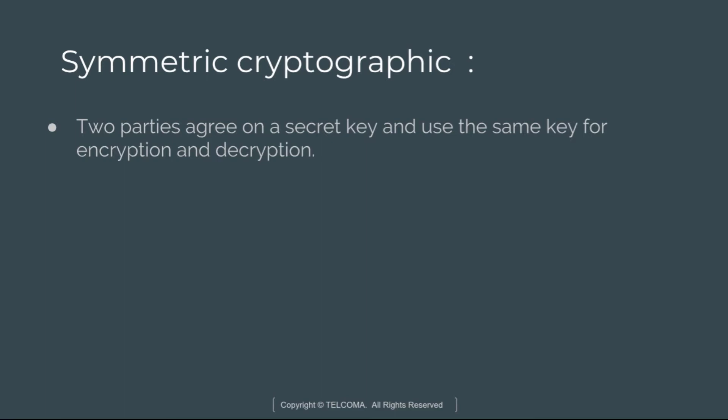For symmetric cryptography, two parties agree on a secret key. The secret key is a private key, and both parties use the same key for encryption and decryption. The problem with this approach is that it doesn't scale well. However, it provides good performance — it is much faster and handles encryption of large files and databases better. It is widely used.